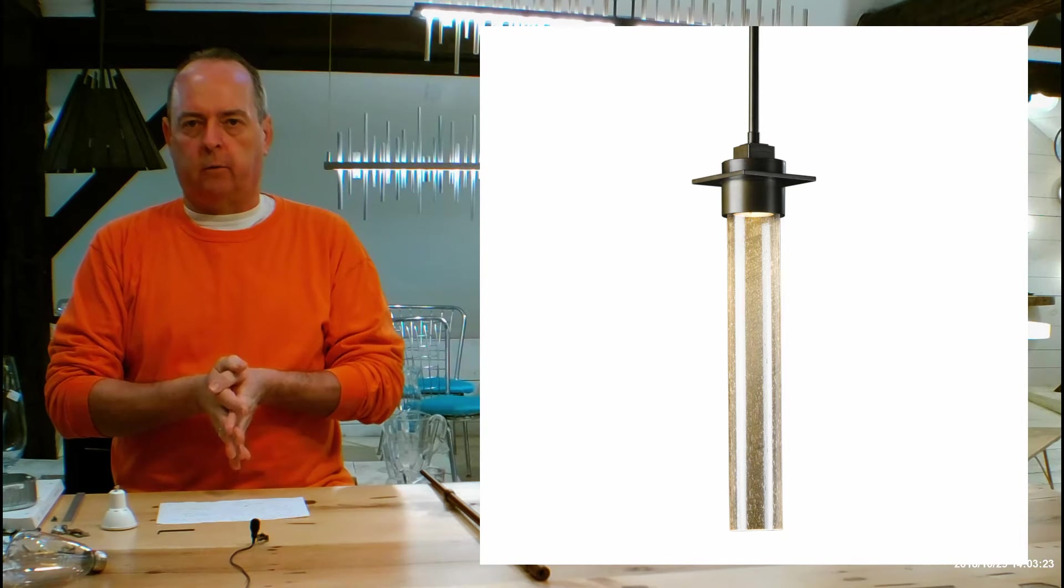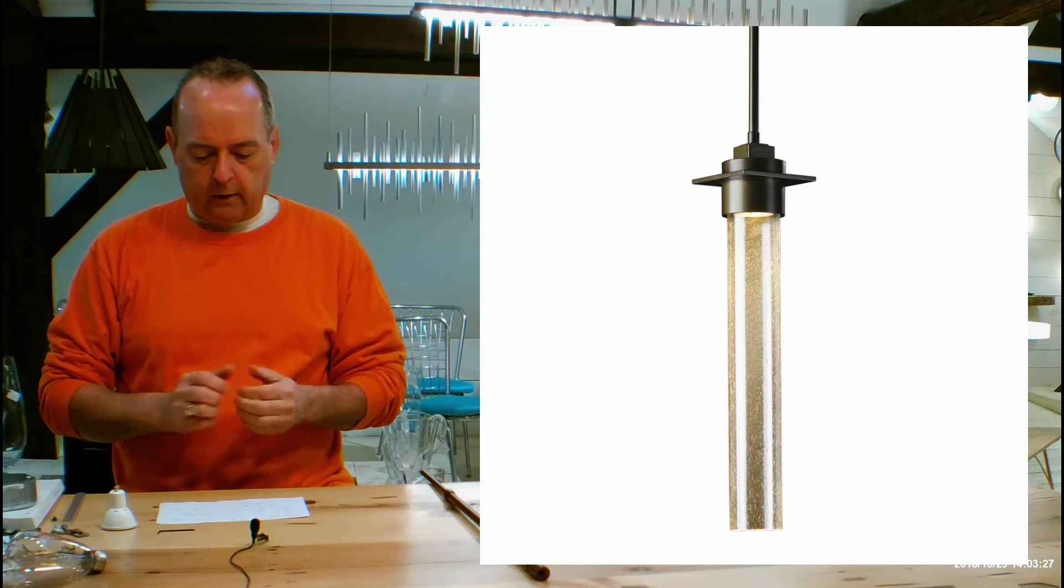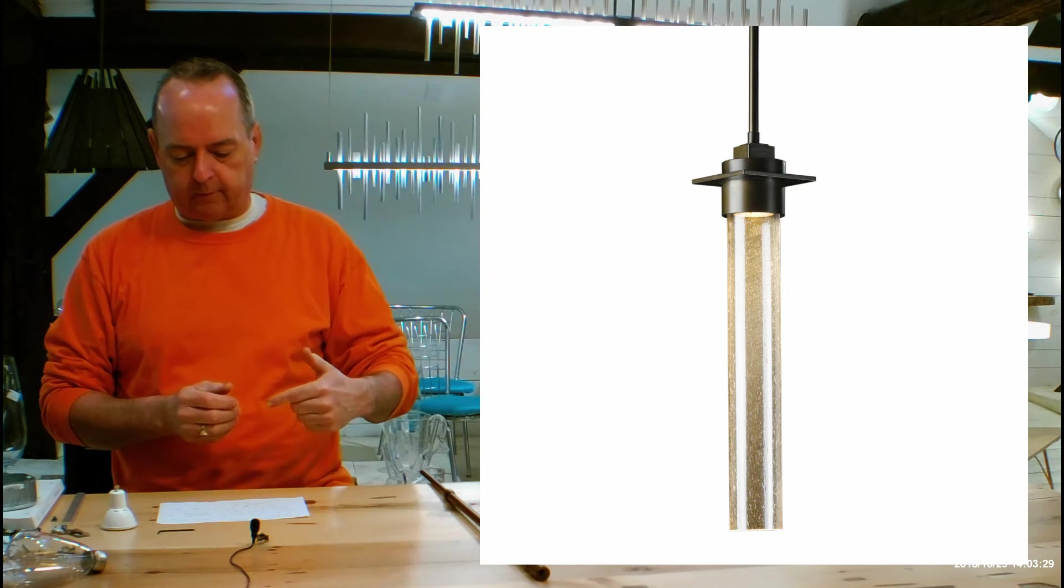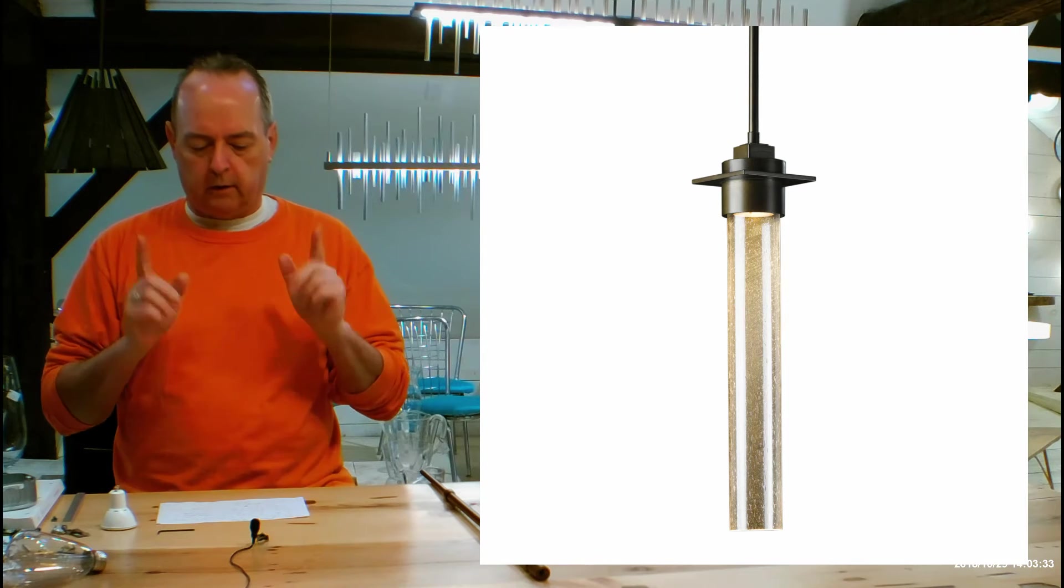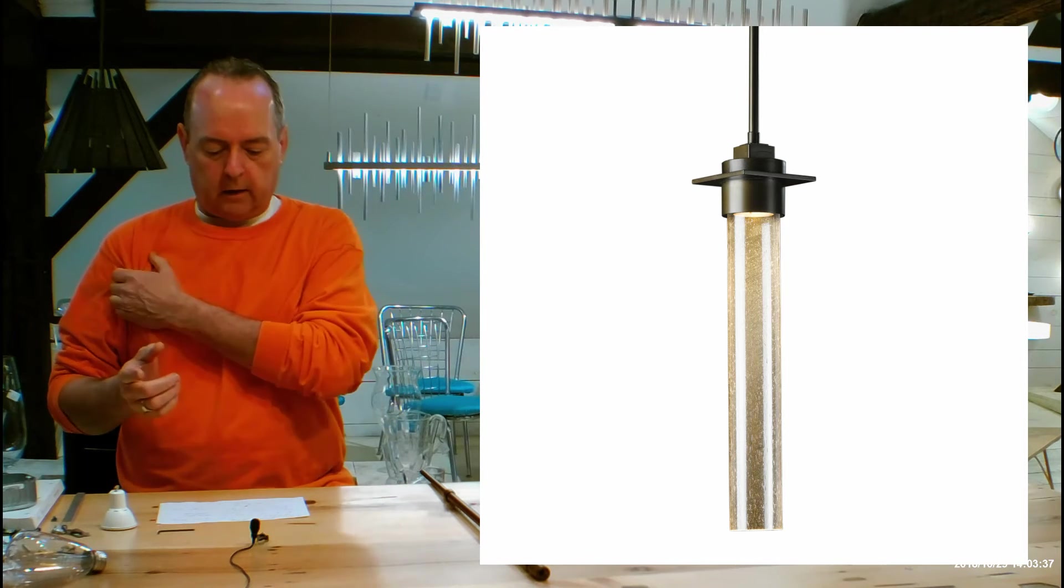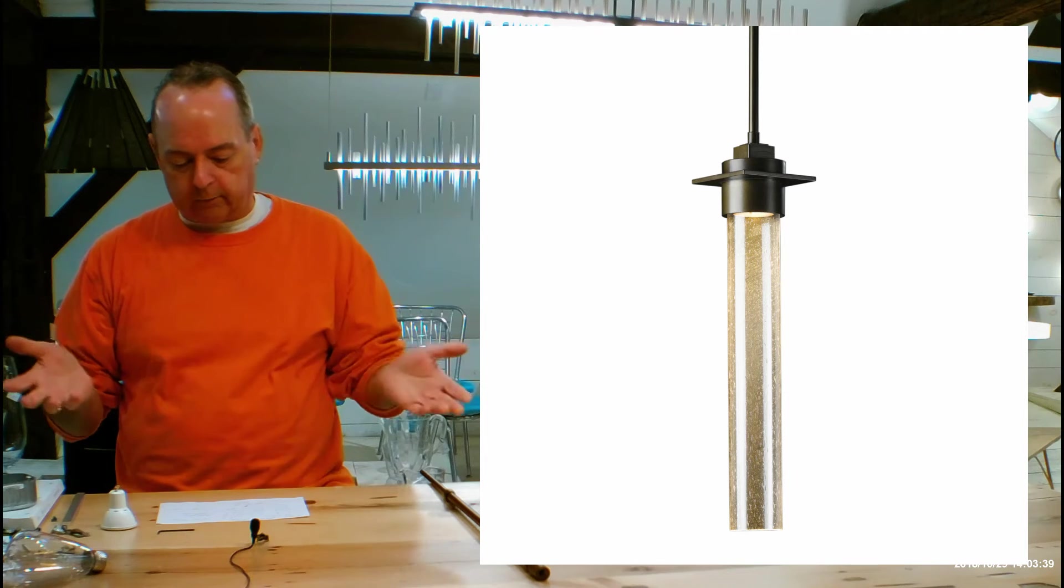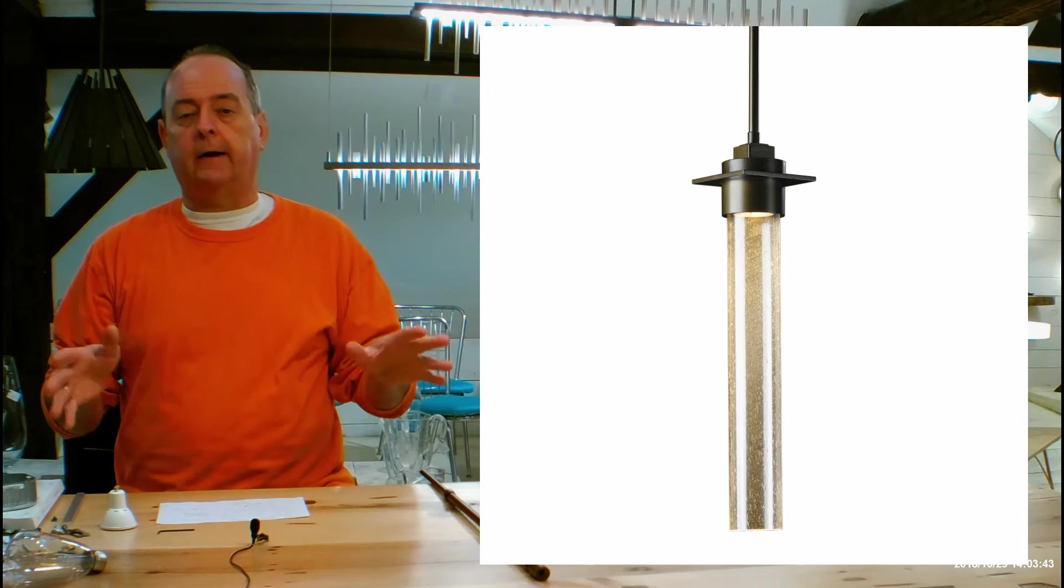You'll notice when you get into the adjustable ranges, we'll talk about in a second, that this starts off at 34.4 inches from the ceiling to the bottom of the fixture. Most people are going to be using this with a 9-foot ceiling. You could probably get away with using this with an 8-foot ceiling provided that's going over something that's pretty low, like a kitchen table or dining table.